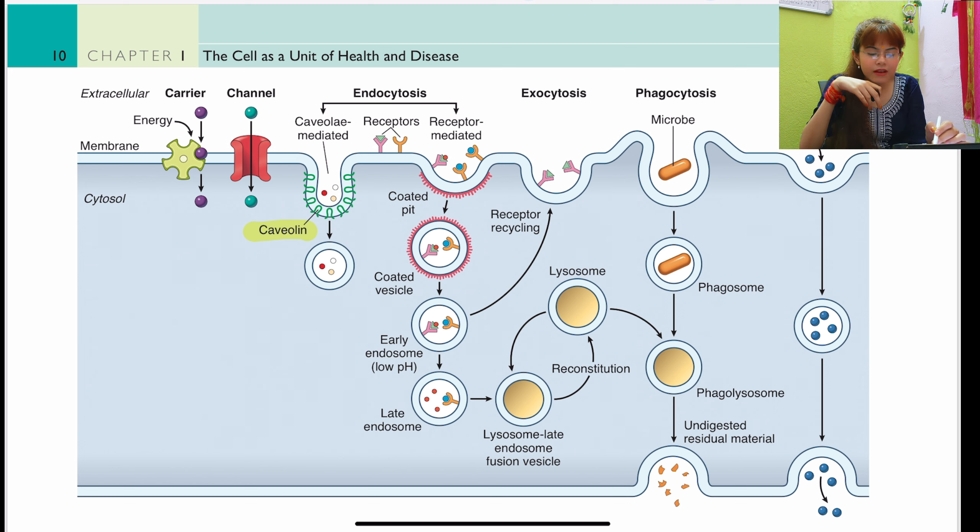Second are intermediate filaments — 10 nanometers in diameter — which link desmosomes and hemidesmosomes. Examples include vimentin in mesenchymal cells, desmin in muscle cells, neurofilaments, glial fibrillary acidic protein, cytokeratins, and laminins. Third are microtubules — 25 nanometers — composed of non-covalently polymerized alpha and beta tubulin. Their function involves molecular motor proteins: kinesins and dyneins. Cilia are an example of microtubules, not intermediate filaments.